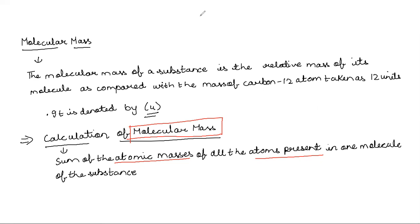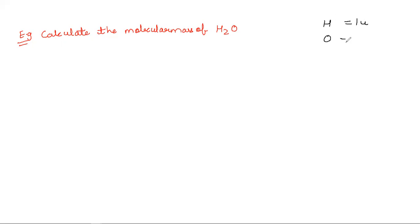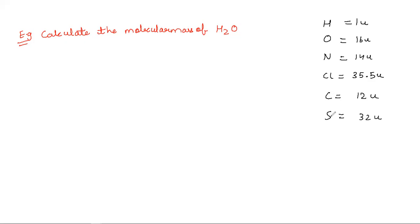Let us see this with the help of an example. To calculate the molecular mass of H₂O. Before you find the molecular mass, you should remember the individual atomic masses. Hydrogen atomic mass is 1u, oxygen is 16u, nitrogen is 14u, chlorine is 35.5u, carbon is 12u, sulphur's atomic mass is 32u. There are certain atoms whose atomic mass you should remember — these are the common atomic masses.